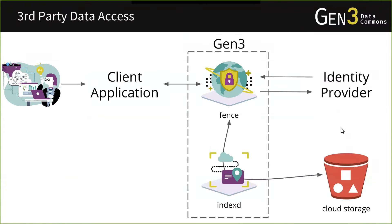To recap: this is the overall architecture for data access within Gen3 and when interfacing with external applications. We've gone through the login flow where a client receives tokens on behalf of the user — we know who the user is and what data sets they're authorized to access. The client application goes through Fence, which goes through IndexD, and is able to retrieve data files from storage to run analysis, return them to the user, or anything else.